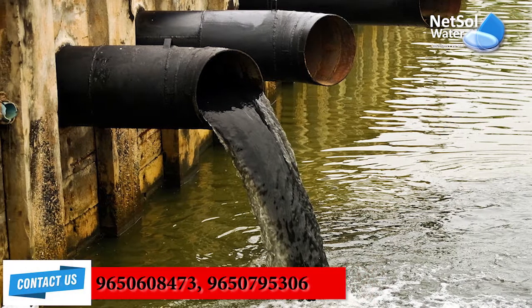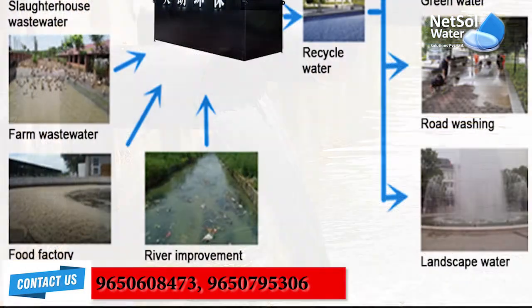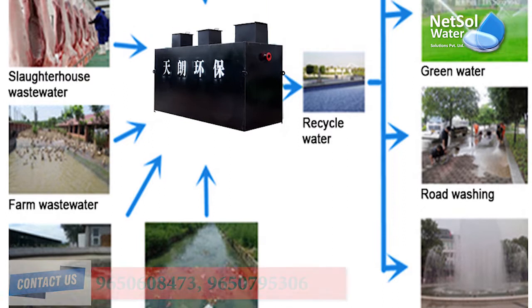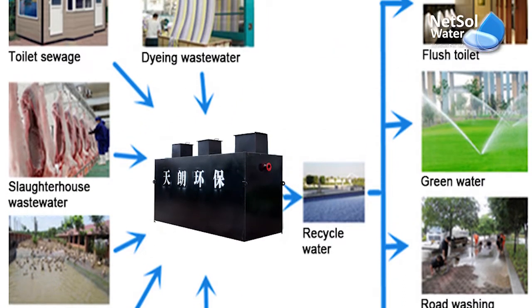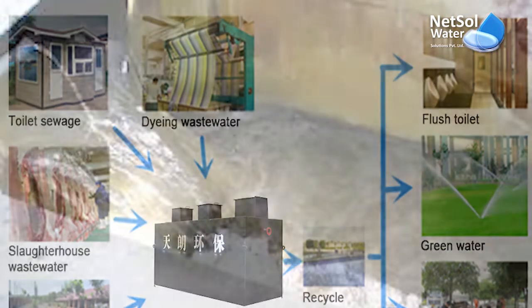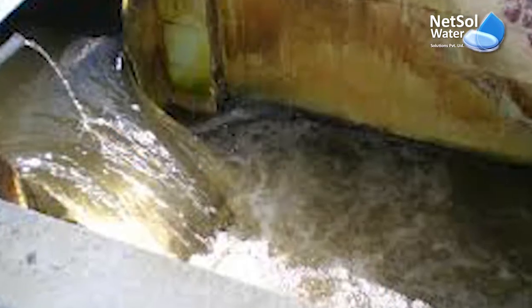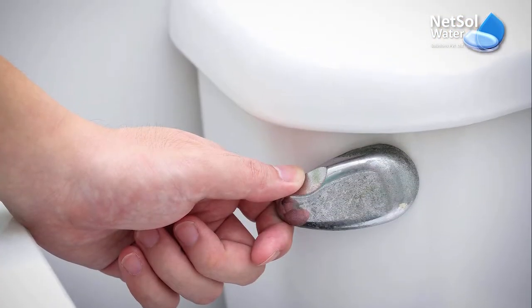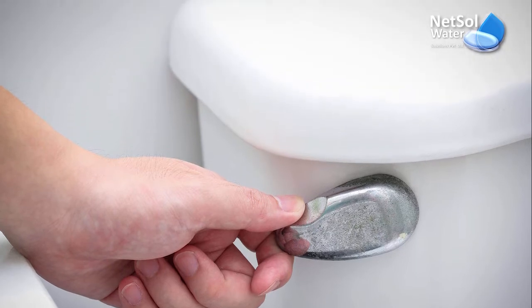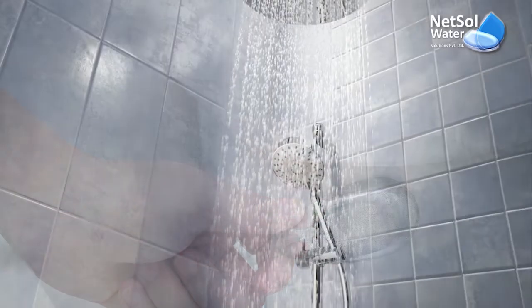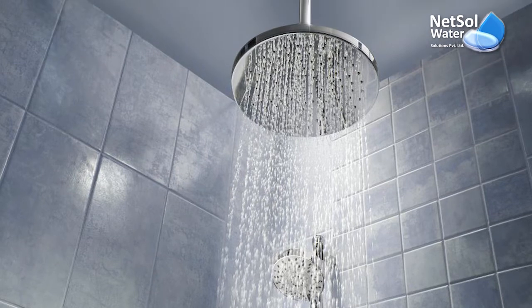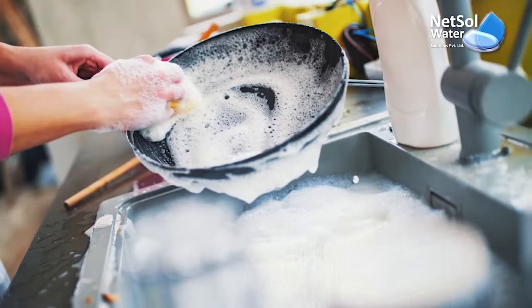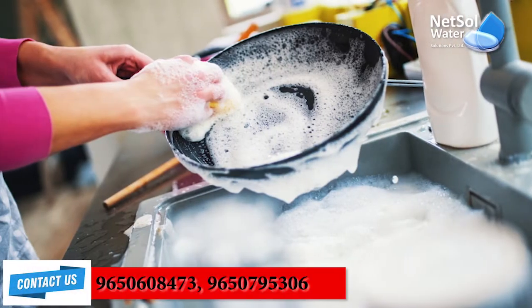Now, you will ask: sewage from our house — how can it be possible? Yes, it can be possible. Our household waste liquids, such as flushing our toilets and our kitchen sink waste, and so on, all contribute to sewage water.